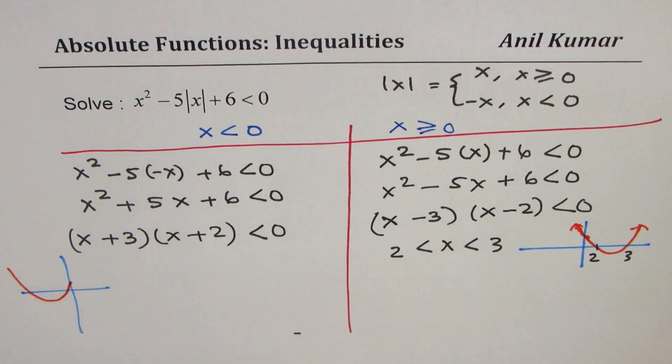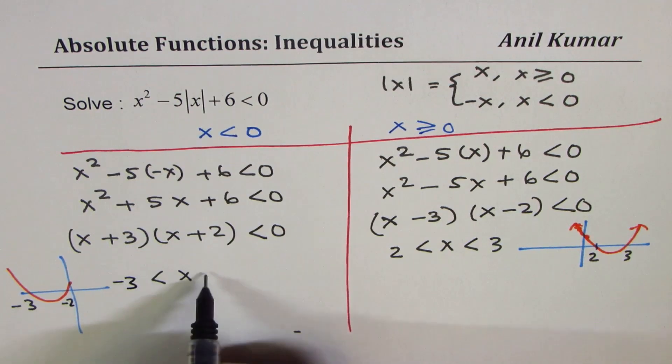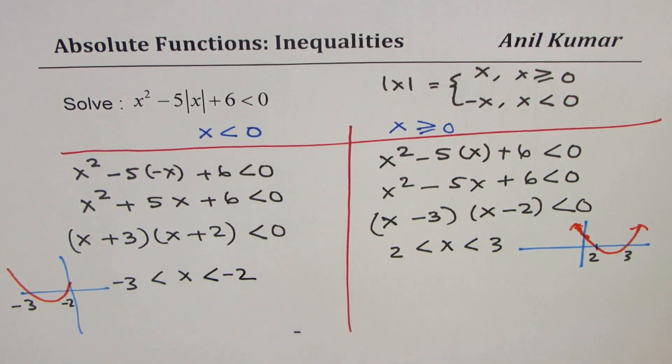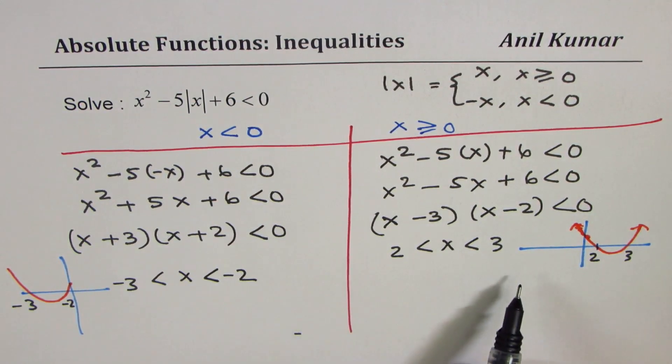It's kind of like this. Clearly, what we see is that x is greater than minus 3 but less than minus 2. It is between these two portions. That becomes the solution as you can clearly see.